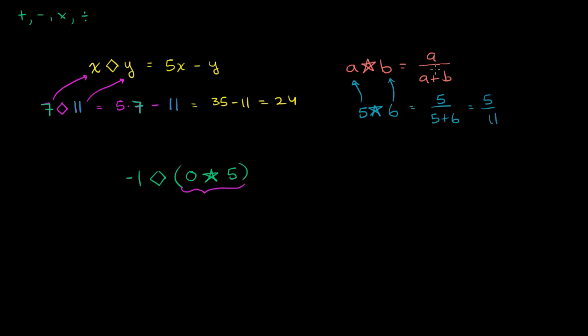0 star 5. That is 0, because now you could view this 0 as the a and the 5 as the b. So it's going to be 0 over 0 plus 5, which is just going to be 0. So this over here is 0 over 5, or it just goes to 0.